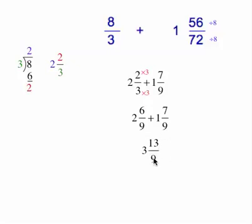So that gives me 3 and 13 ninths. But once again, I have an improper fraction. So we're going to use division again. 9 goes into 13 once. 1 times 9 is 9. Subtract and we get a remainder of 4. Once again, this is our quotient.